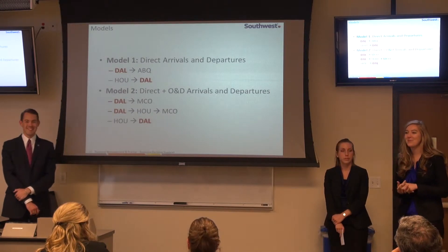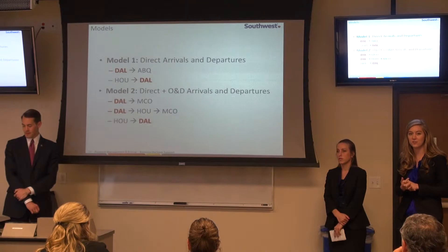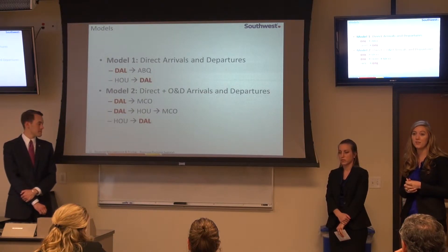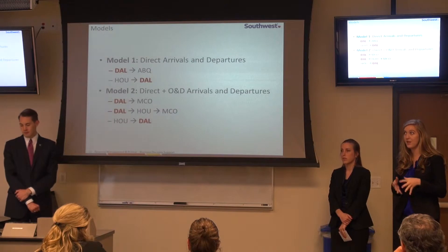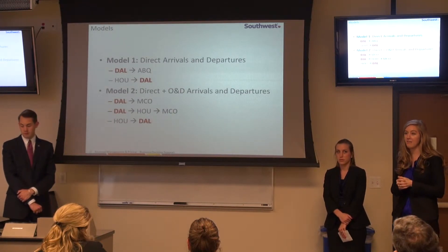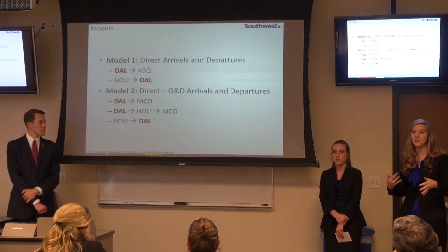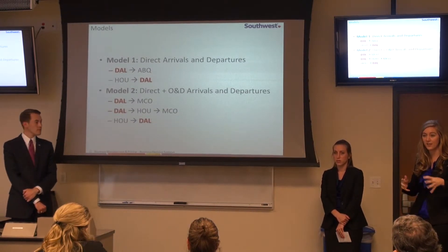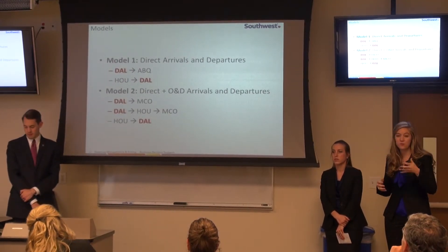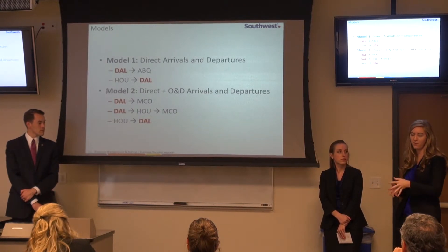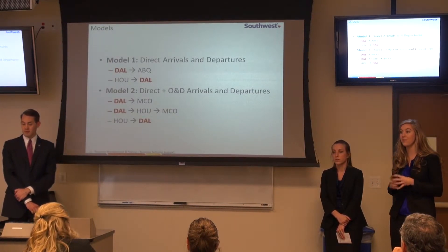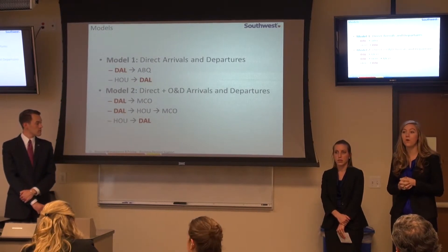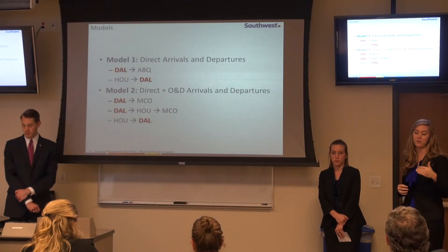We took a two-model approach, starting smaller and building out. Model 1 only looked at direct arrivals and departures for new and existing markets — for example, Dallas to Albuquerque or Houston to Dallas — without the O and D component. This allowed us to run initial tests and verify we were heading in the right direction. Model 2 is Model 1 plus O and D — the origin-destination stopover traffic — giving a more realistic picture of revenue.